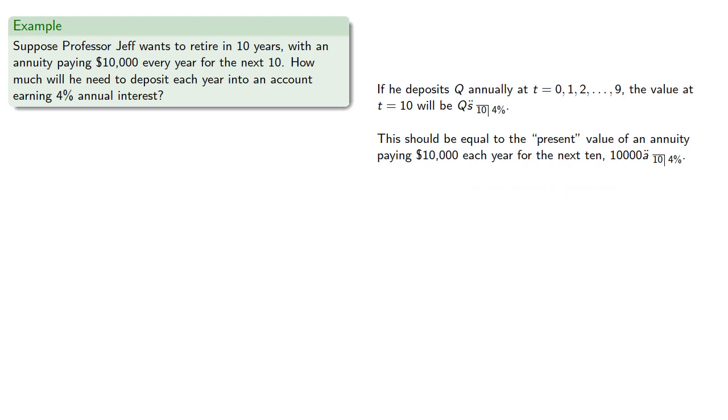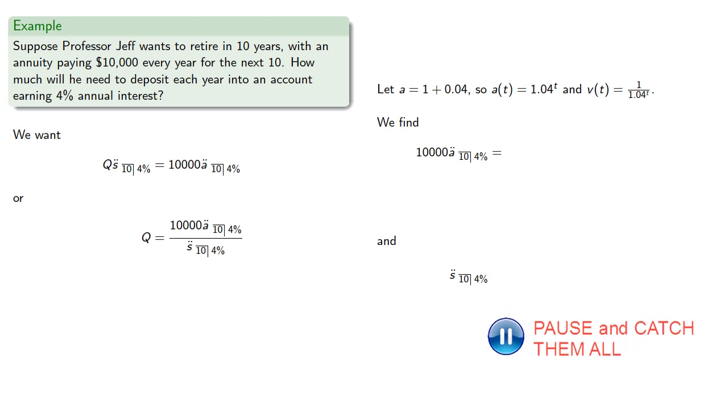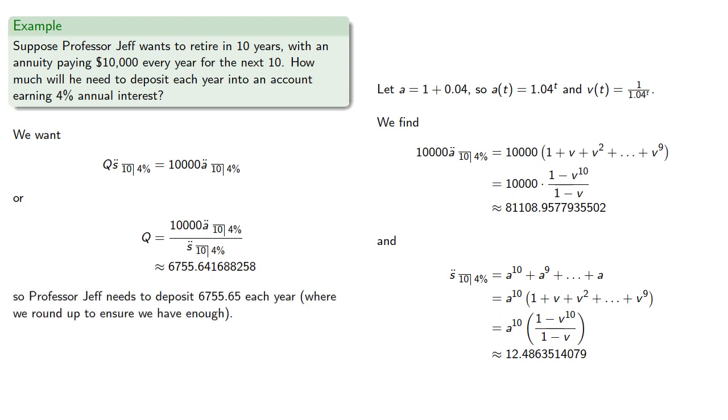We can solve this for Q. We'll evaluate all these terms. At 4% interest we have a equal 1 plus 0.04, so a of t is a to power t and v of t is the reciprocal of a of t. We find... So Professor Jeff needs to deposit $6755.65 each year, where we round up to ensure that we have enough in the account to pay out $10,000 each year.